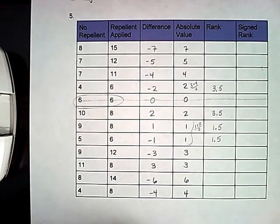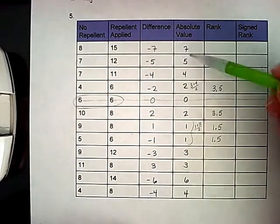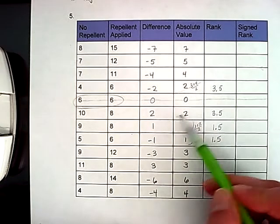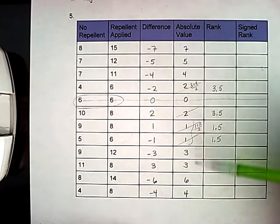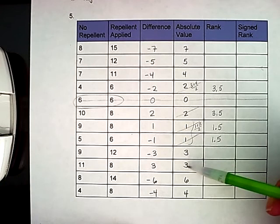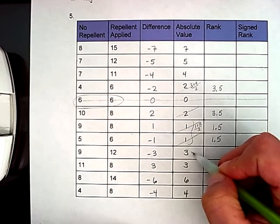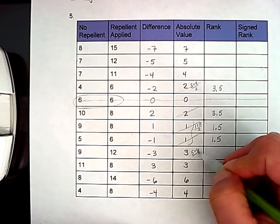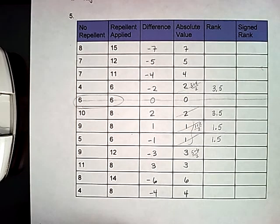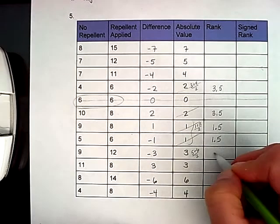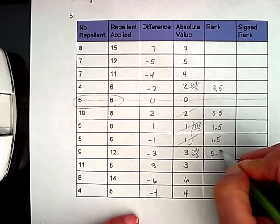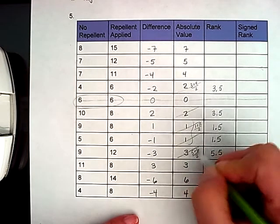Now I'm looking for fifth place. So I've used this, I've used, I've used, I've used. My next value is three. And again, I have two of those. So I'm going to share those with fifth and sixth place. So five plus six divided by two is going to give me a ranking of five and a half for both of those.